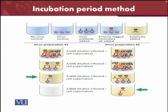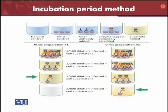For the incubation period method, we can also use different virus preparations. Here you can see virus preparation 1 and virus preparation 2. A 1-in-200 dilution infected cells supernatant, then a 1-in-400 infected cells supernatant, and a 1-in-800 dilution infected supernatant. There is also a no-virus control, a virus control, virus with antibody added, enzyme-tagged secondary antibody added, and substrate added. You have already added the tagged antibody inside the experiment and the substrates are also tagged.